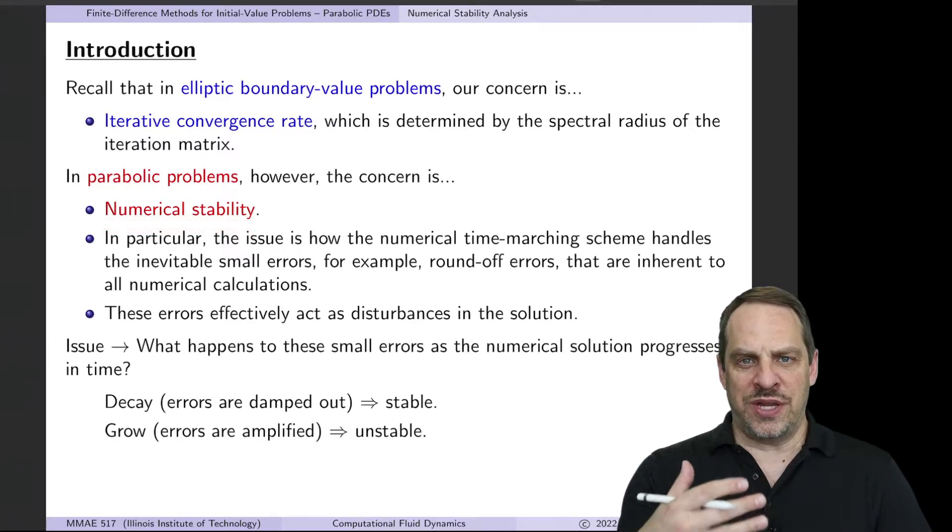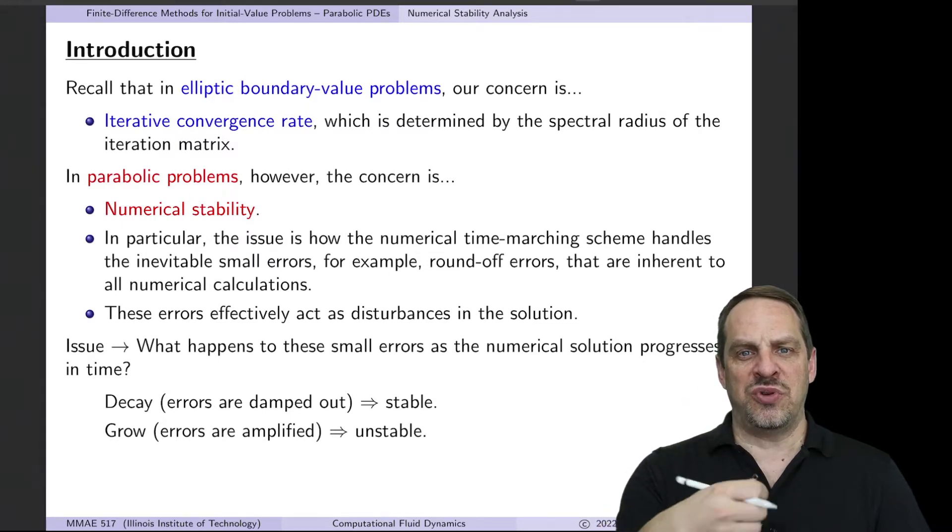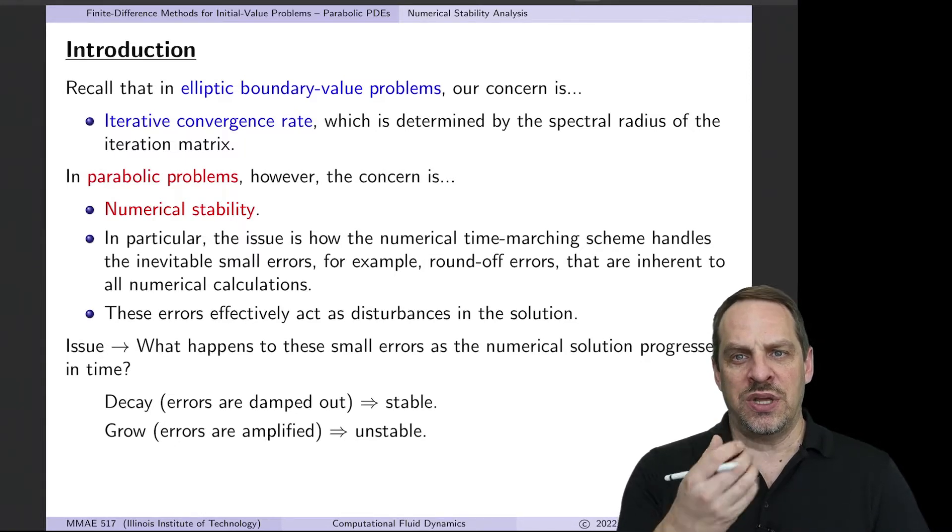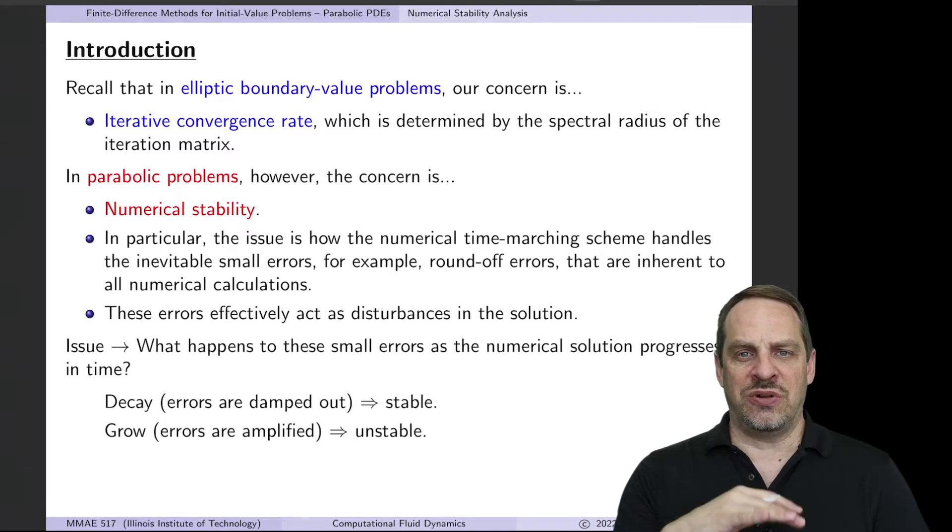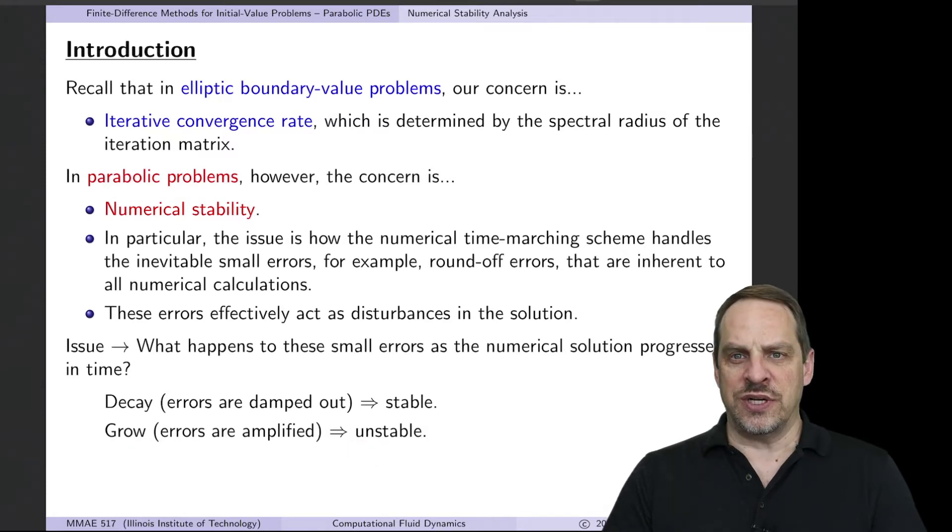So we're no longer iterating, instead we're marching in time. And the question is, every time you obtain a new approximate solution at each time step, you're introducing additional round-off errors. You're essentially perturbing the system by a tiny little bit. And the question is, what does the numerical algorithm itself do with those tiny perturbations? If the errors decay, then it is stable. If the errors grow and become larger, then it is unstable.